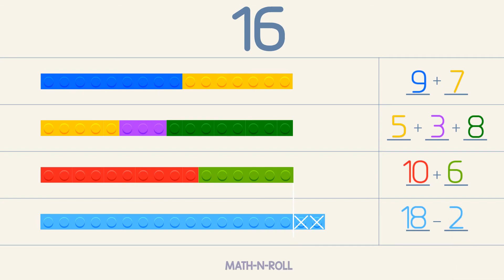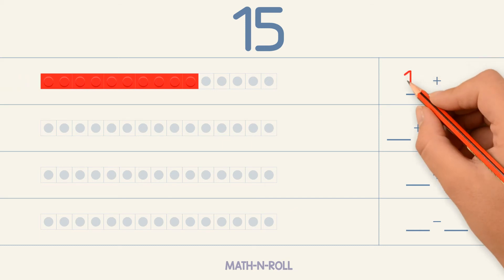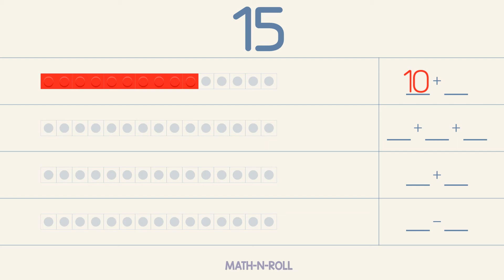We can add and subtract in different ways to make 15. Let's make 15 by adding 2 different numbers. For the first number, we can pick anything less than 15. To make 15, we need 5 more pieces. So 10 plus 5 equals 15.